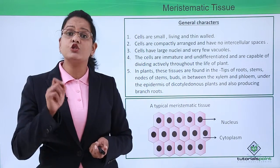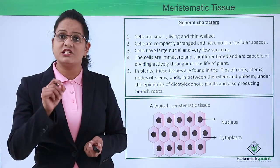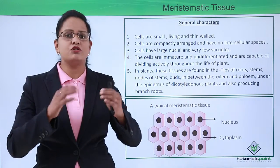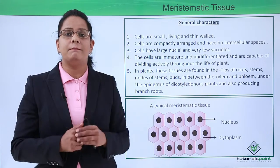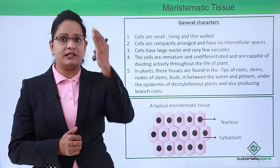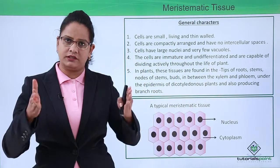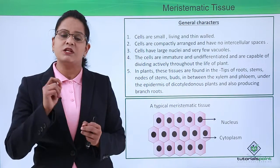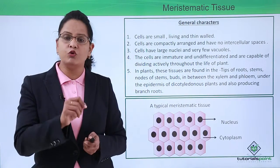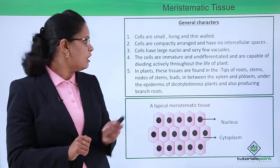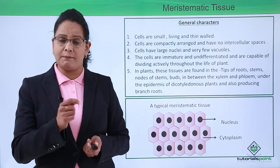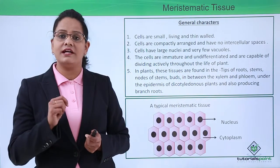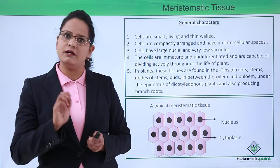Where are these tissues found? The plant grows vertically, horizontally, and also beneath the soil. The top growth, the girth growth, and the bottom growth — all these growths happen because of the meristem. Meristematic tissue is present at the tip of the root and stem, present in the leaf primordia, also in the epidermis of dicotyledonous plants and in the branches. These are the areas where meristematic tissue is found inside a plant.